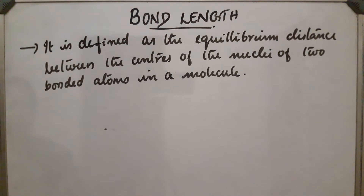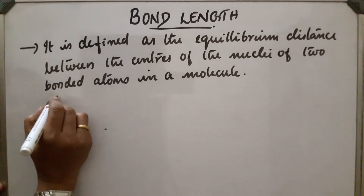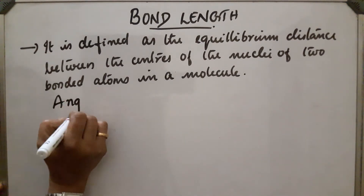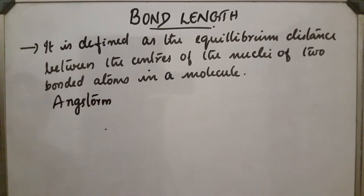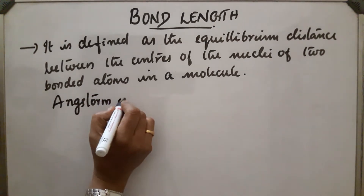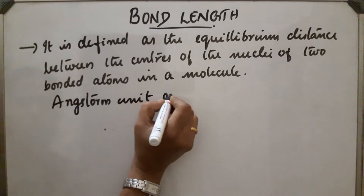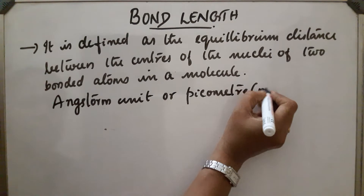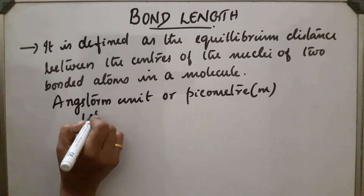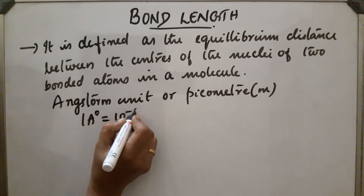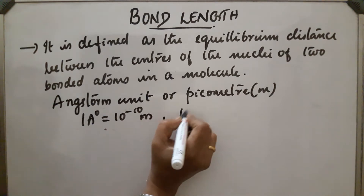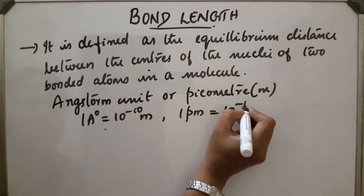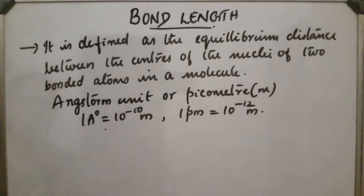Bond length can be expressed in two ways: Angstrom unit or picometer (pm). One Angstrom is equal to 10 raise to minus 10 meter, and one picometer is equal to 10 raise to minus 12 meter.